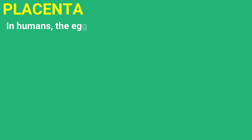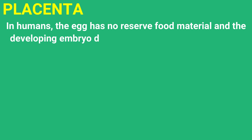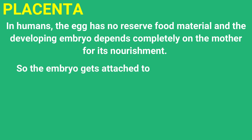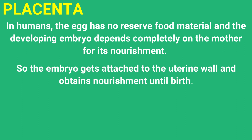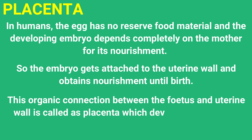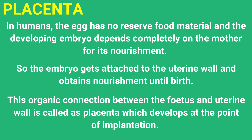The next heading is placenta. In humans, the egg has no reserve food material, and the developing embryo depends completely on the mother for its nourishment. So the embryo gets attached to the uterine wall and obtains nourishment until birth. This organic connection between the fetus and the uterine wall is called the placenta, which develops at the point of implantation.